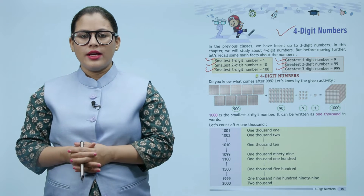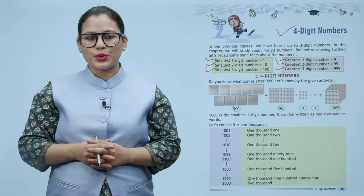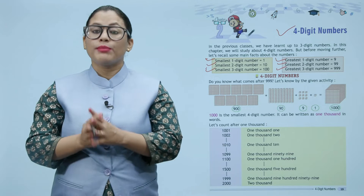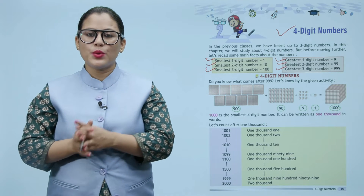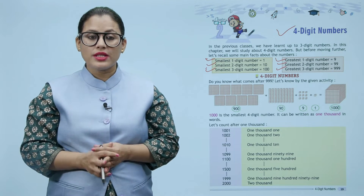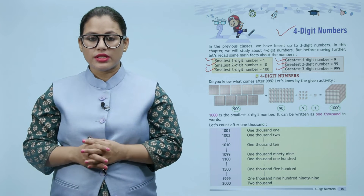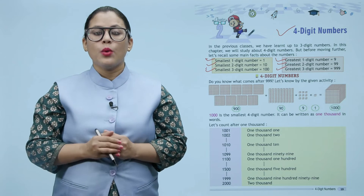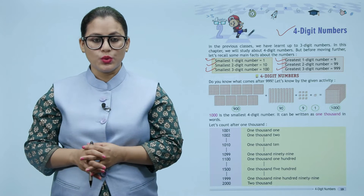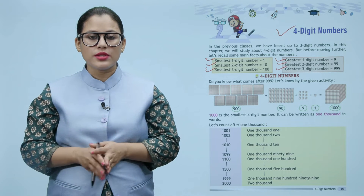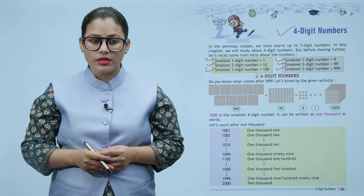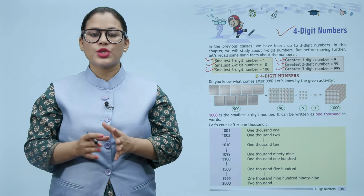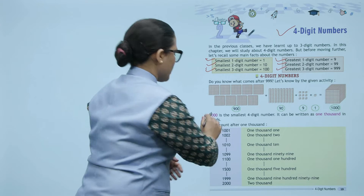Let's know by the given activity. Nine hundred ninety-nine ki baad kya aata hai, yeh activity ki through ham dekhenge. 900 plus 90 plus 9 plus 1 is equals to one thousand. One thousand is the smallest four digit number. It can be written as one thousand in words. Let's count after one thousand: one thousand one, one thousand two, one thousand ten, one thousand ninety-nine, one thousand one hundred, one thousand five hundred, one thousand nine hundred ninety-nine, two thousand.